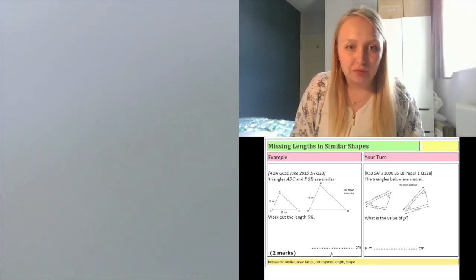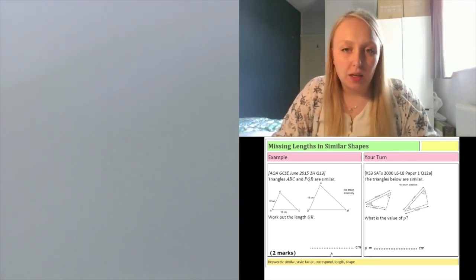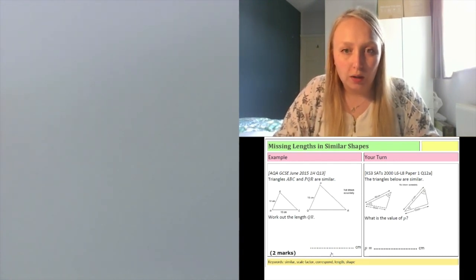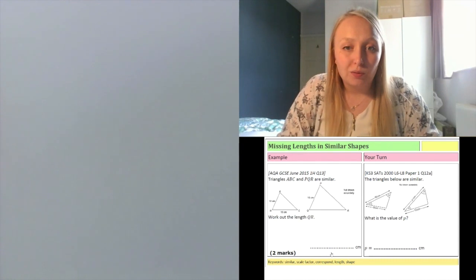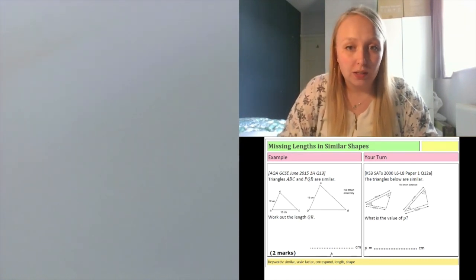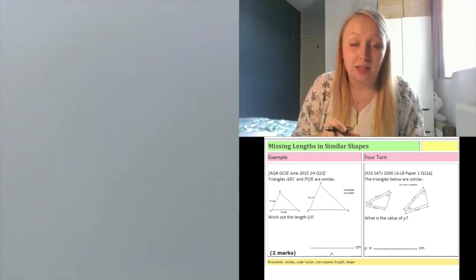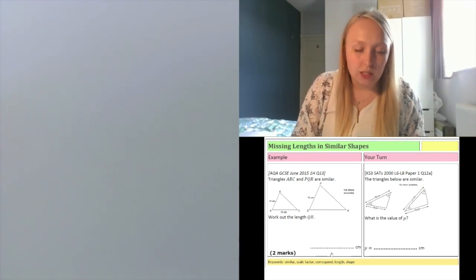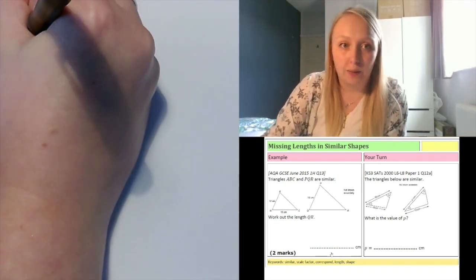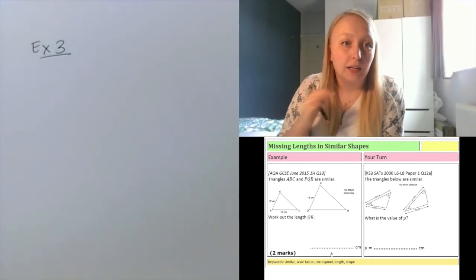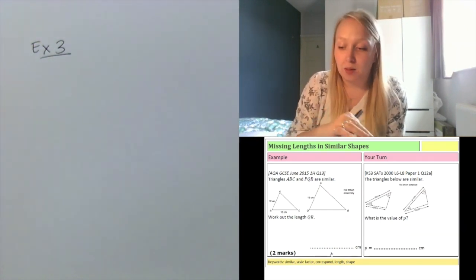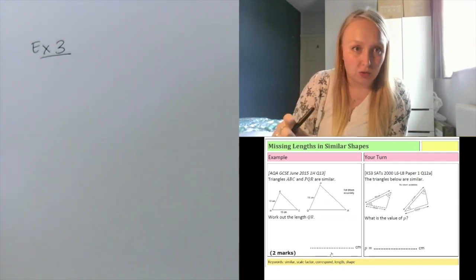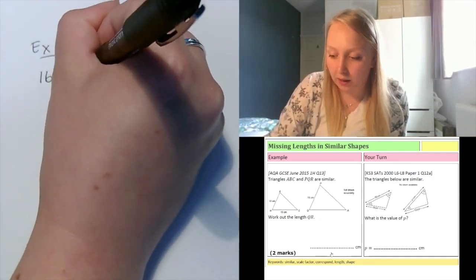Let's have a look at example 3. Triangles ABC and PQR are similar, so one is an enlargement of the other. I need to work out the length of QR, which is the base of the bigger triangle. First, I find the scale factor using corresponding sides. The left hand side of both triangles is given: the small one is 12 and the big one is 16. I do 16 divided by 12, which doesn't give a whole number, so the scale factor is four thirds as a fraction, or 1.3 recurring as a decimal. I'll leave it as a fraction as it's neater.